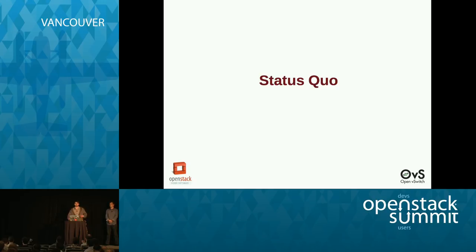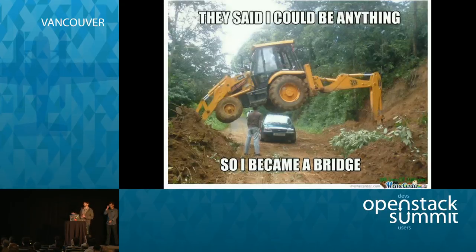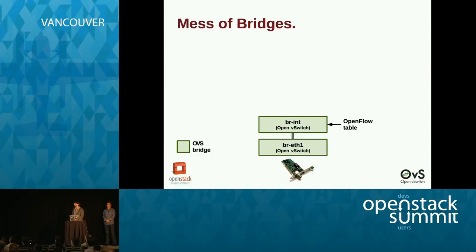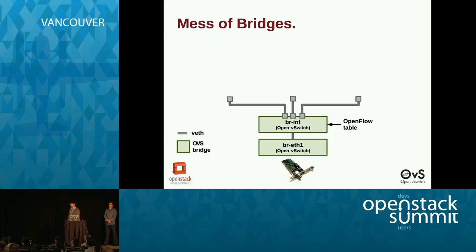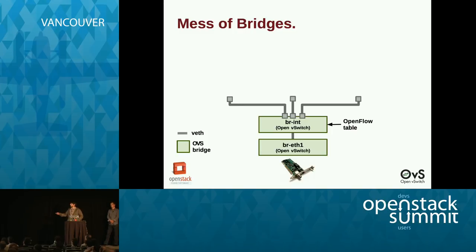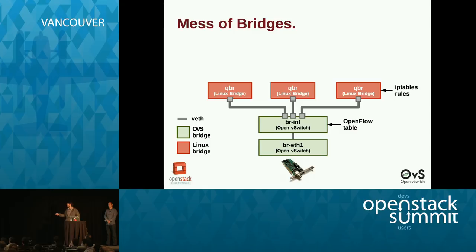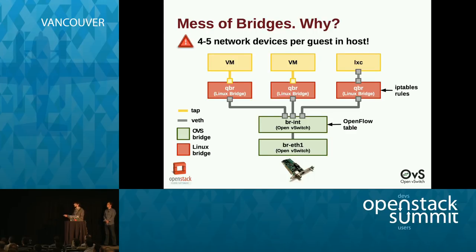Whenever you create a virtual machine today in OpenStack using the Neutron ML2 OpenVSwitch driver, your compute node looks more or less like this. You can clearly see something is wrong — specifically, you have a couple of OpenVSwitch bridges: one for the uplink and one as the integration bridge. When you trigger VM creation, Nova creates a VETH pair: one side attached to the integration bridge and the other side attached to a Linux bridge per VM — an extra layer of interaction.